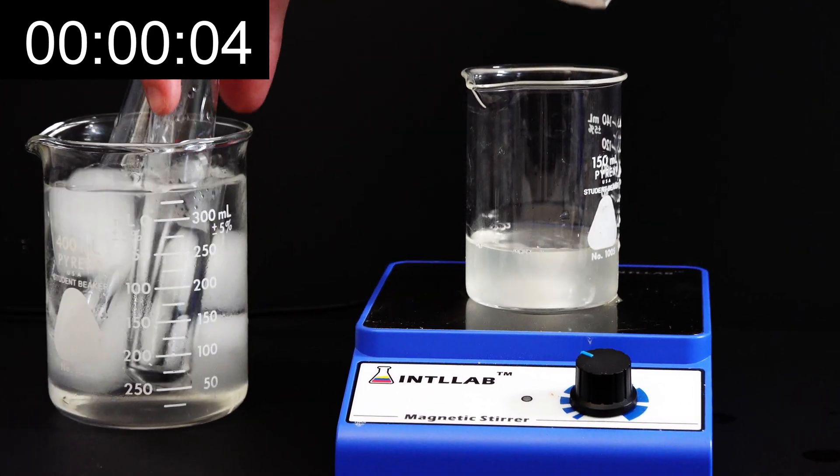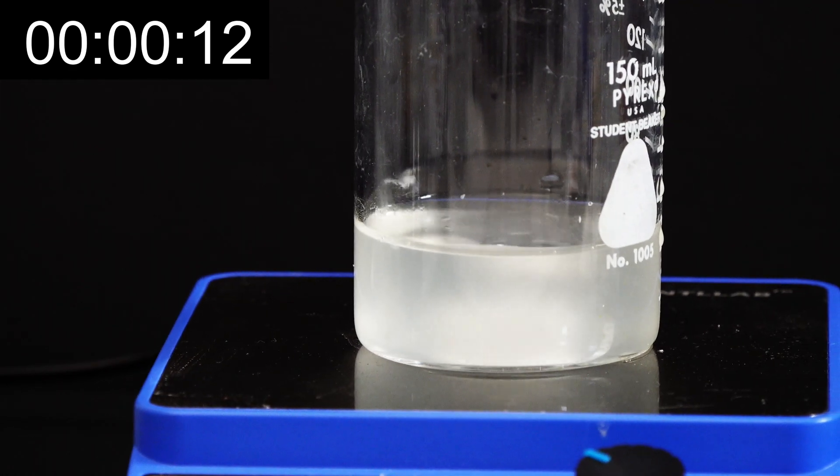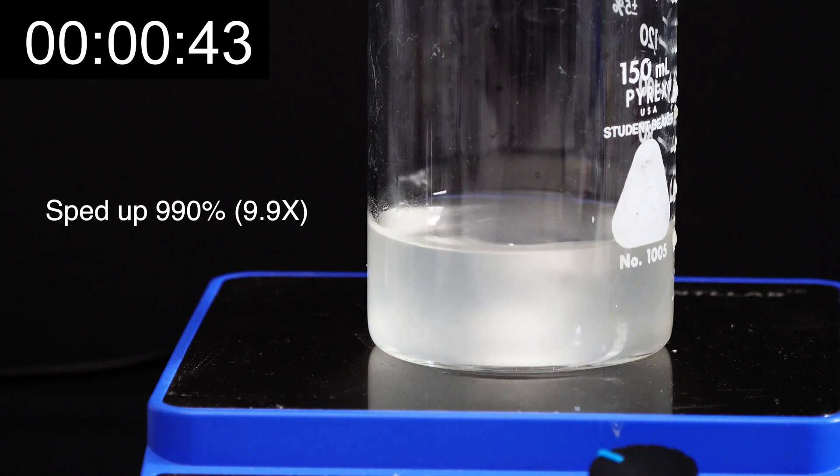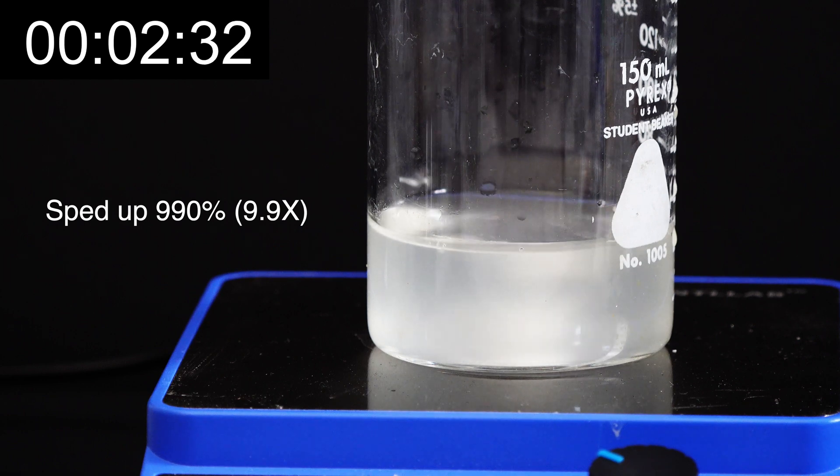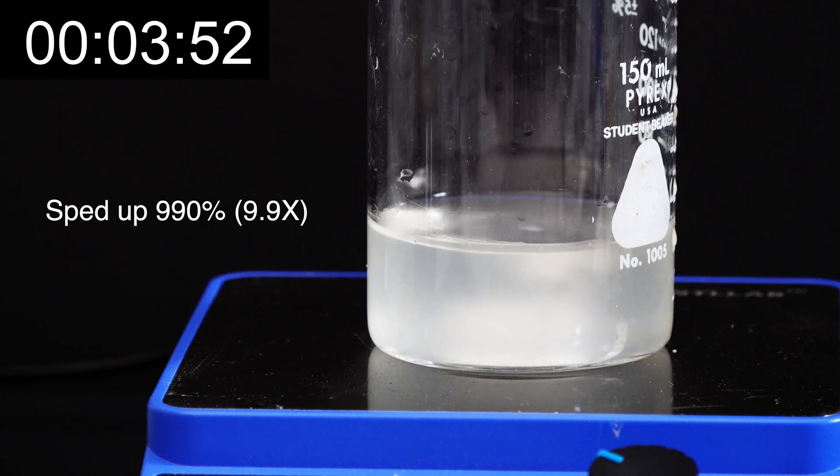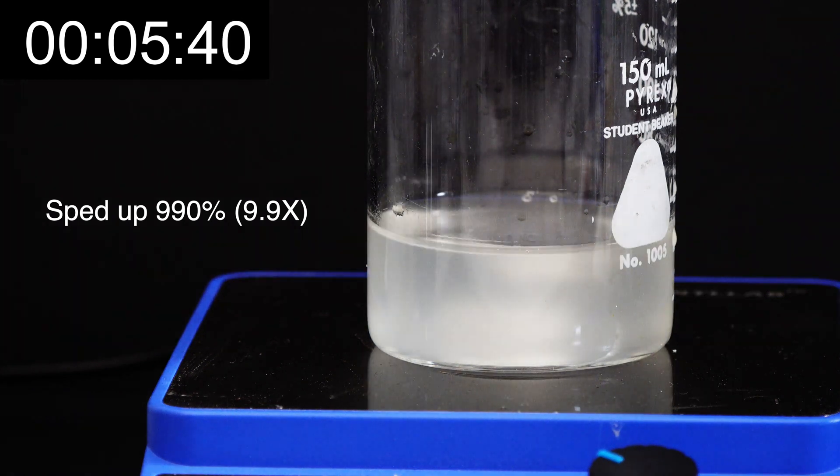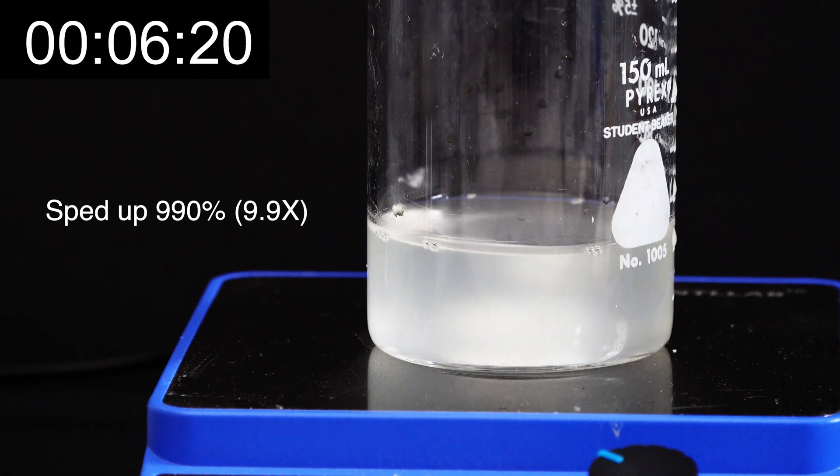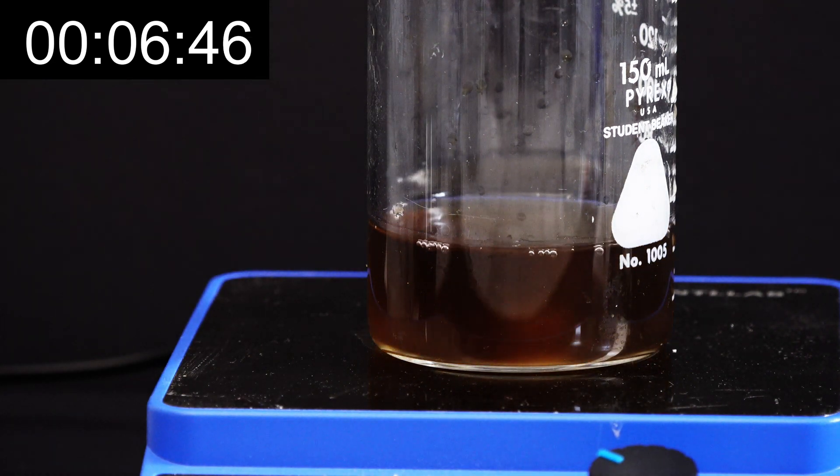When we added the vitamin C to the iodine, the iodine was reduced to iodide ions, and that eliminated the color. When we added solution B, that had hydrogen peroxide in it. So the hydrogen peroxide reacts with iodide ions to reform iodine. Now the reaction between the iodine and the vitamin C is a lot faster. So as soon as the hydrogen peroxide creates iodine, the iodine is reduced back into iodide ions, which keeps the solution colorless. After a while, we run out of vitamin C, which means the vitamin C is no longer able to reduce the iodine into iodide. So we have iodine build up, and that's where it starts turning yellow, and then very quickly the starch reacts with the iodine to make that blue color.